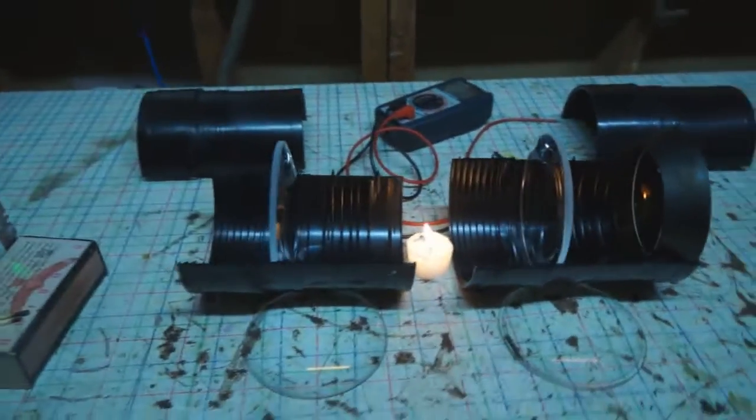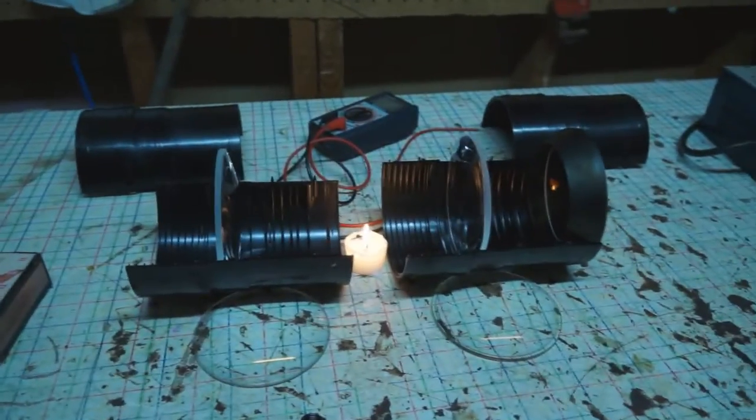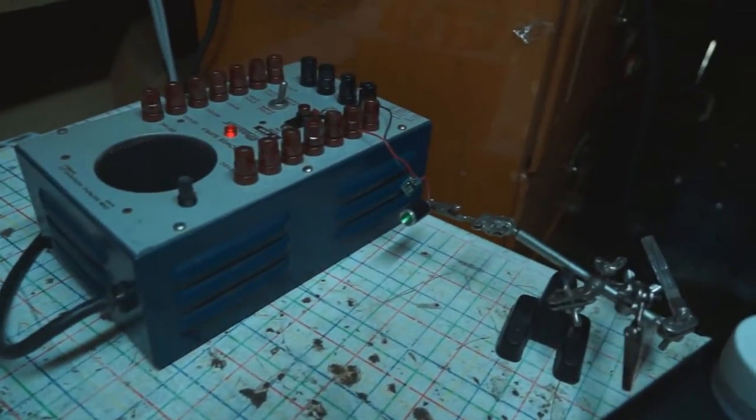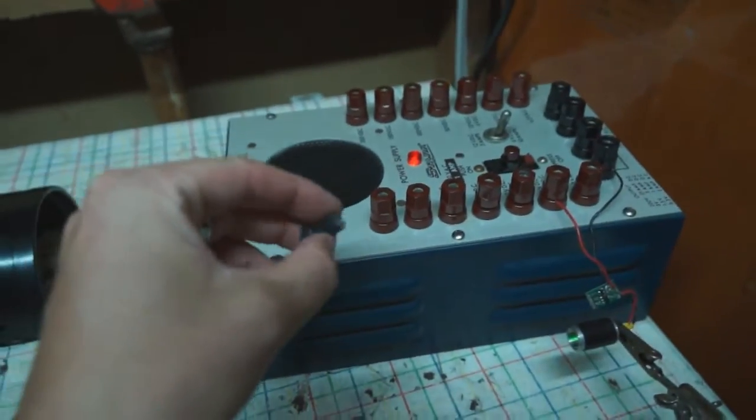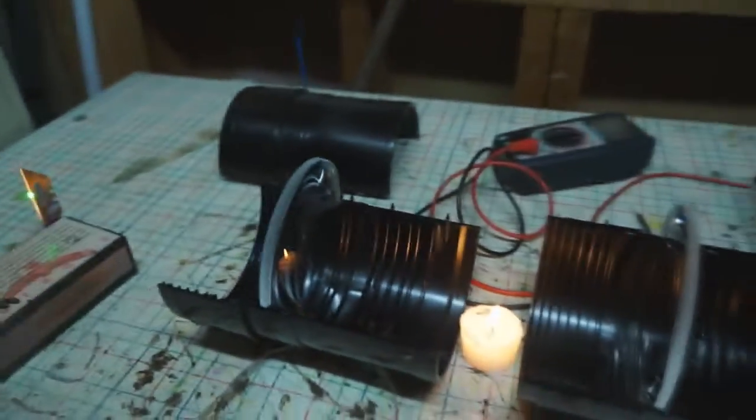This video is being taken using my MacGyvered Schlieren Imaging setup. I'm using lenses that I scavenged from a projection TV. A laser diode is my point source of light with the collimating optics removed, and a razor blade put at the focal point of the second lens.